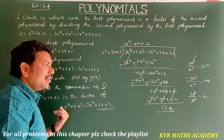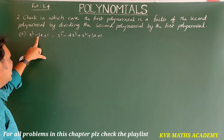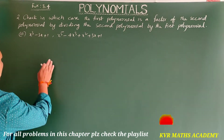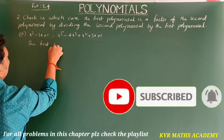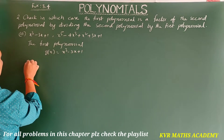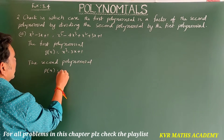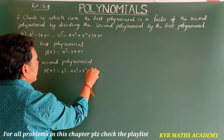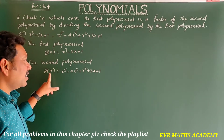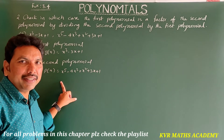Now the third question. The first polynomial is x³ - 3x + 1, and the second polynomial is x⁵ - 4x³ + x² + 3x + 1. Let g(x) = x³ - 3x + 1 and p(x) = x⁵ - 4x³ + x² + 3x + 1. We have to check if g(x) is a factor of p(x) by dividing.